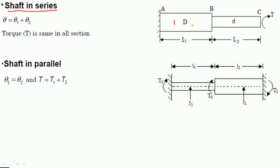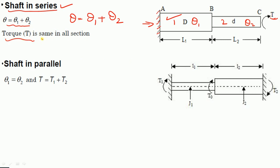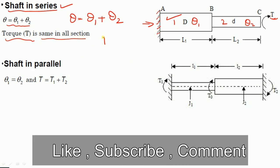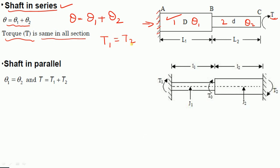Shaft in series: we have two shafts where shaft 1 is fixed and we are applying a torque T at end C. Shaft 1 deflects with angle theta 1 and shaft 2 deflects with angle theta 2. The total deflection is equal to deflection of shaft 1 plus deflection of shaft 2. The torque T is the same for all sections, so T1 equals T2.